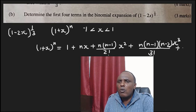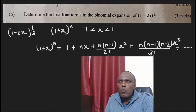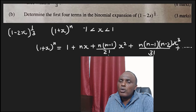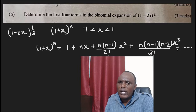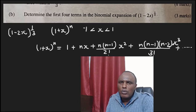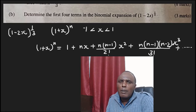This expansion can go to any term you want. For example, the next term would be n multiplied by (n minus 1) multiplied by (n minus 2) multiplied by (n minus 3) multiplied by x to power 4 over 4 factorial. In this particular problem, we want to expand up to the fourth term.